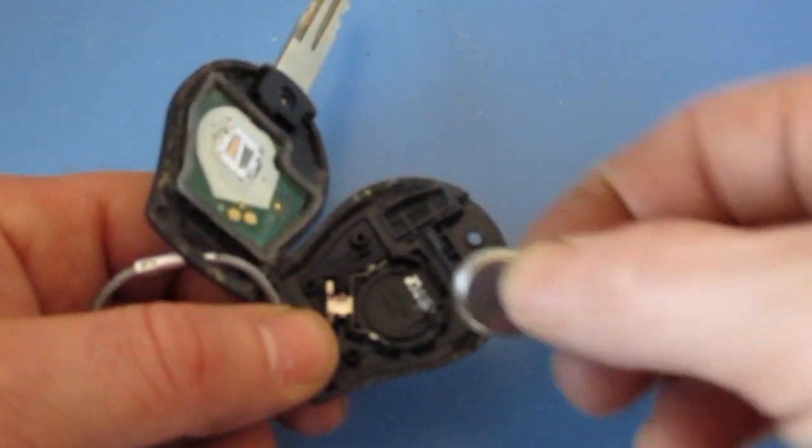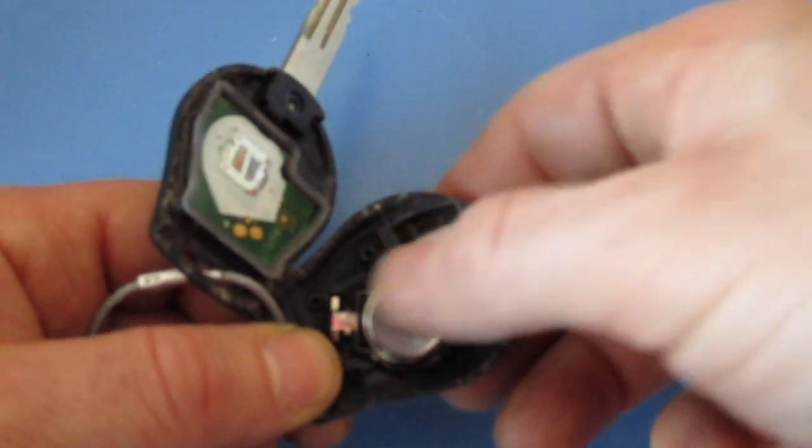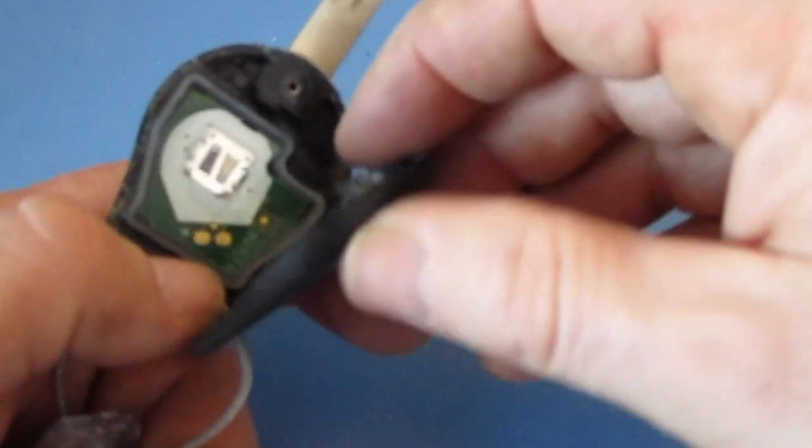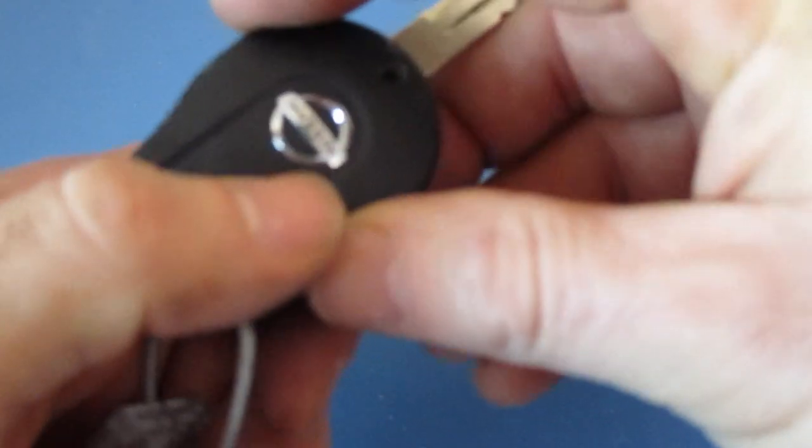Take your new battery, turn it upside down in the same position, pop that in, and then turn your key back to itself.